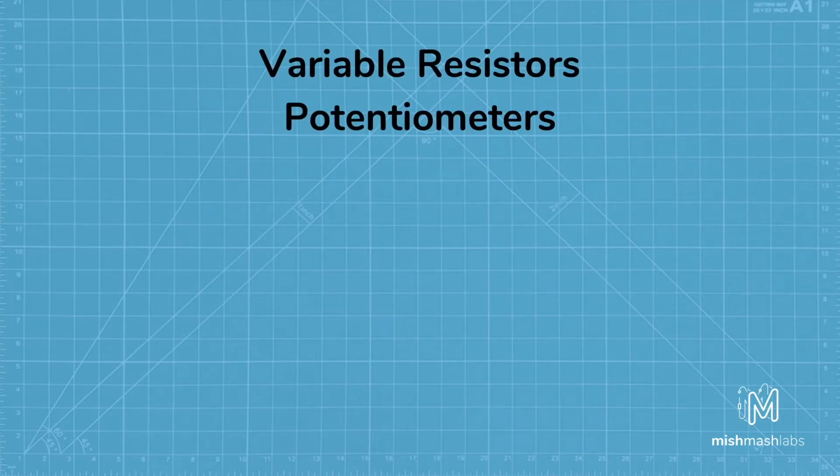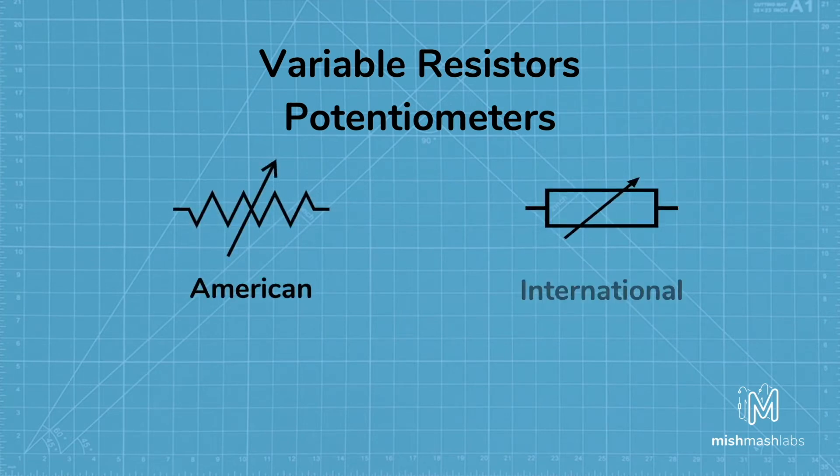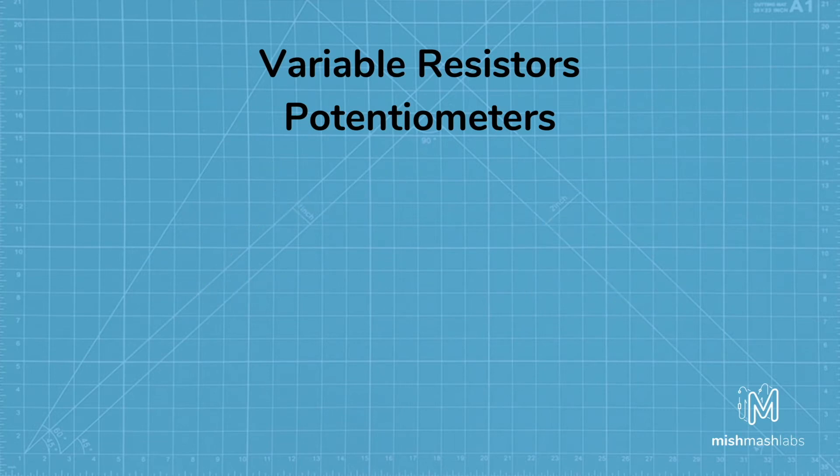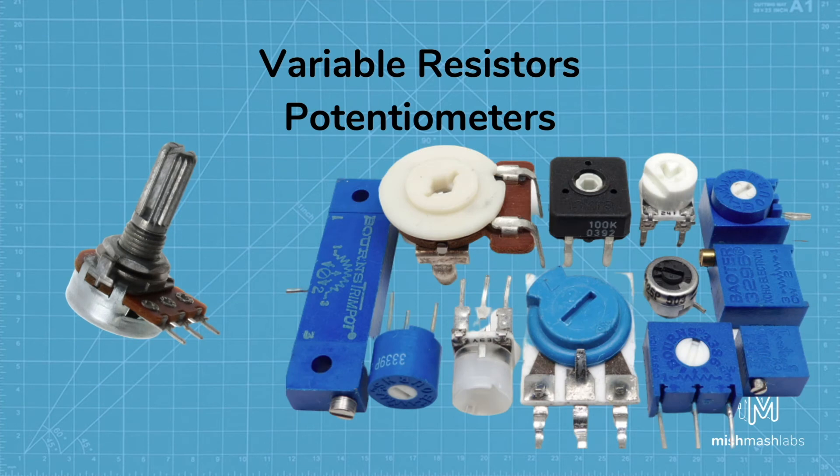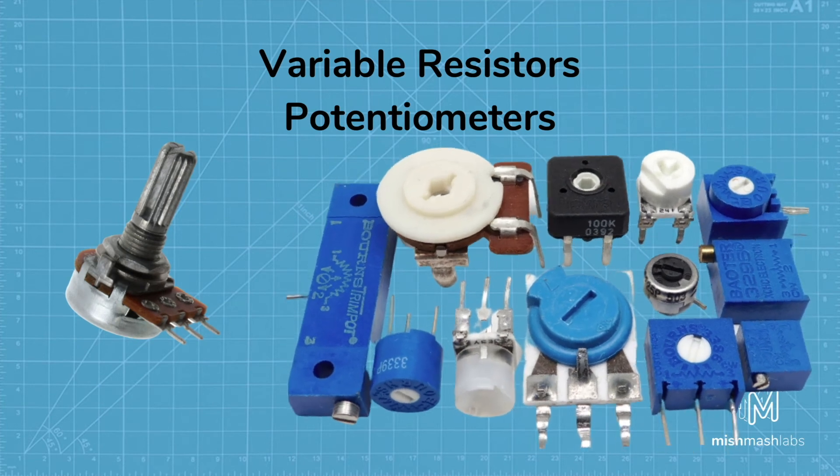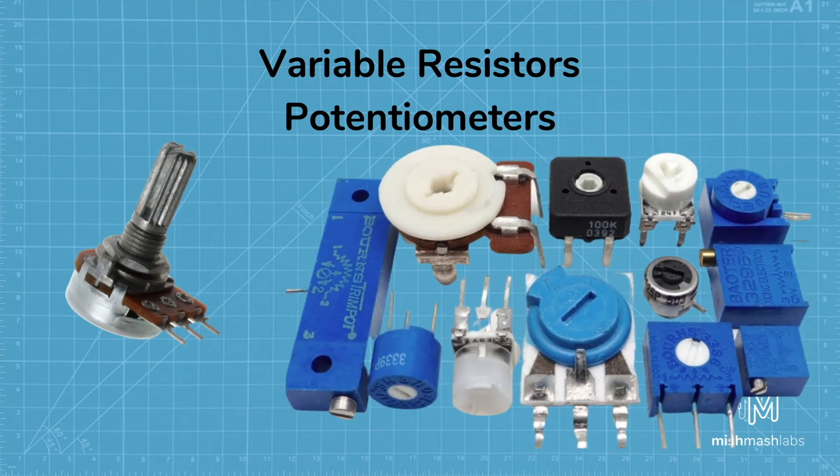Variable resistors, known as rheostats or potentiometers, are resistors where you can vary the resistance between a specific range of values by adjusting a center tap between two internal resistors which creates a voltage divider. These are often used for inputs like control knobs that need to be adjustable.